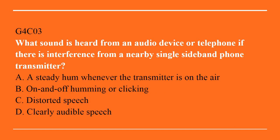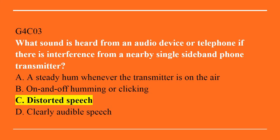G4C03: What sound is heard from an audio device or telephone if there is interference from a nearby single sideband phone transmitter? A. A steady hum whenever the transmitter is on the air. B. On and off humming or clicking. C. Distorted speech. Or D. Clearly audible speech. The correct answer is C. Distorted speech.